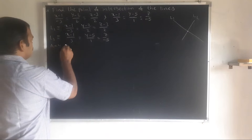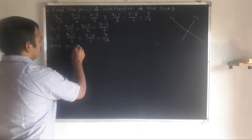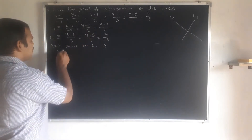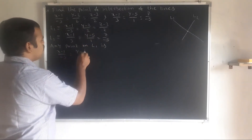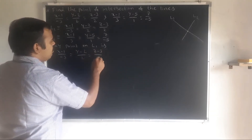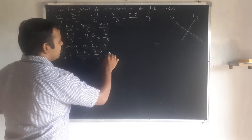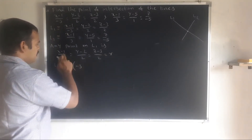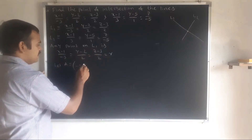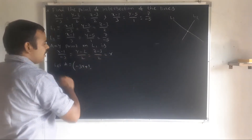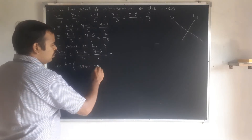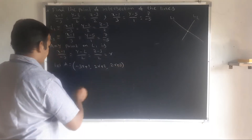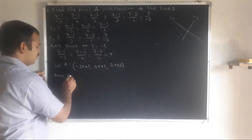Any point on L1: set the line equation equal to parameter r. So (x minus 1) over minus 3 equal to (y minus 2) over 2 equal to (z minus 3) over 2 equal to r. Therefore x equal to minus 3r plus 1, y equal to 2r plus 2, z equal to 2r plus 3.